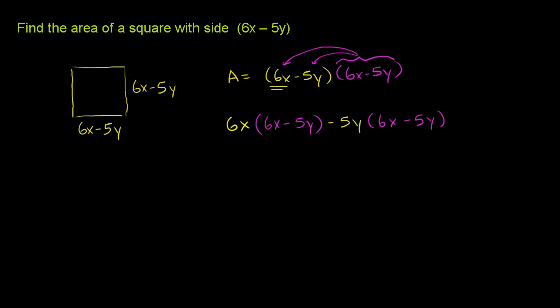So we have 6x times 6x. So when I distributed just this, I'm now doing the distributive property for the second time. 6x times 6x is 36x squared. And then when I take 6x times negative 5y, I get 6 times negative 5 is negative 30. And then I have an x times a y, negative 30xy.